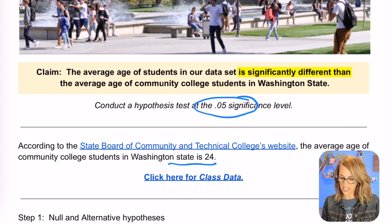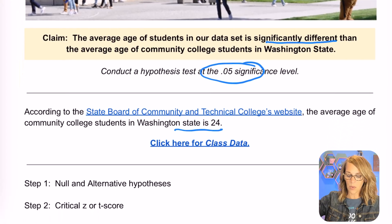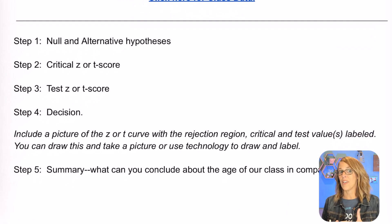I'm going to underline significantly different than. If I scroll down, here's what we need to do and Desmos is going to help us with quite a bit of it. We need to do the null and alternative hypothesis. Desmos can't help with that, but Desmos will help with the critical and we're going to be doing a t-score here.